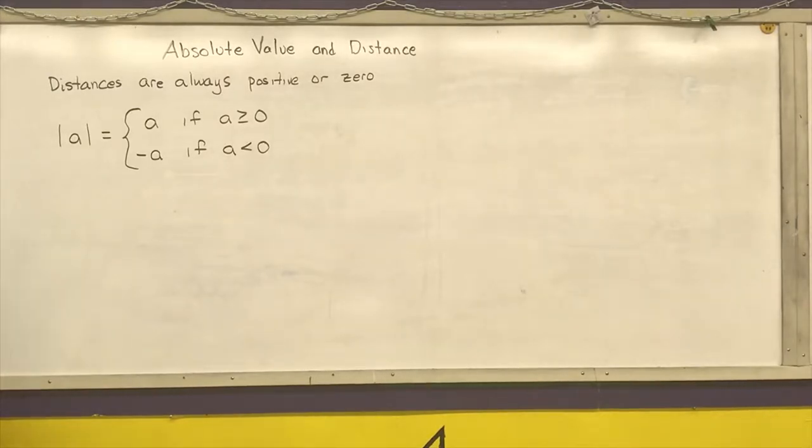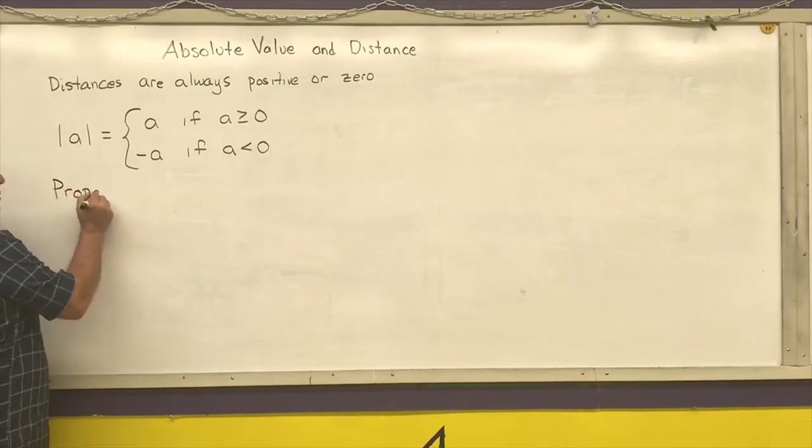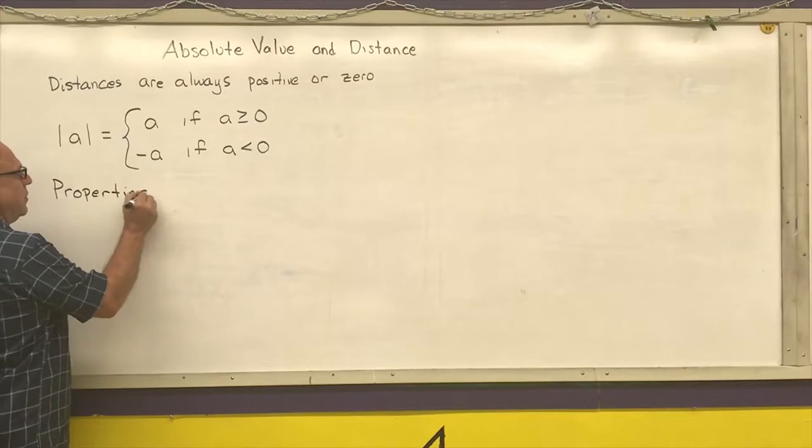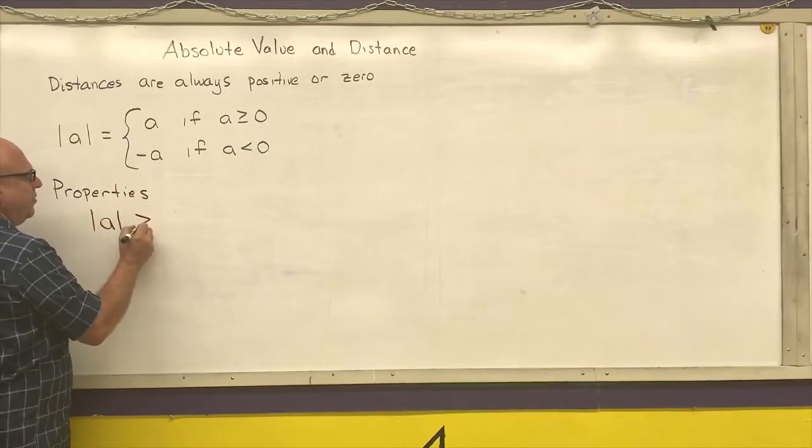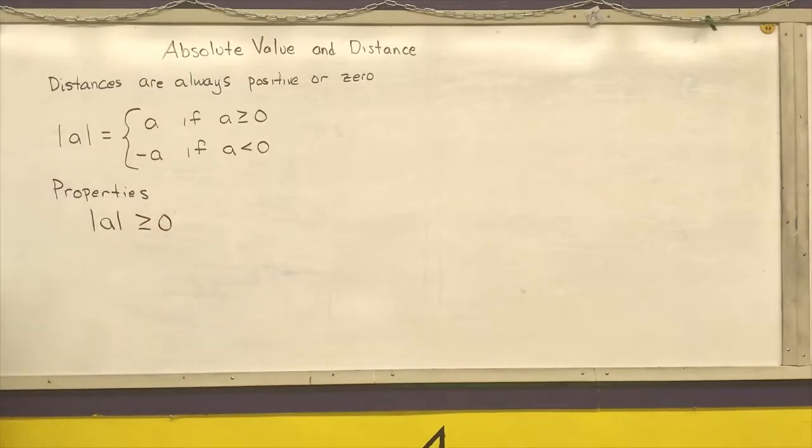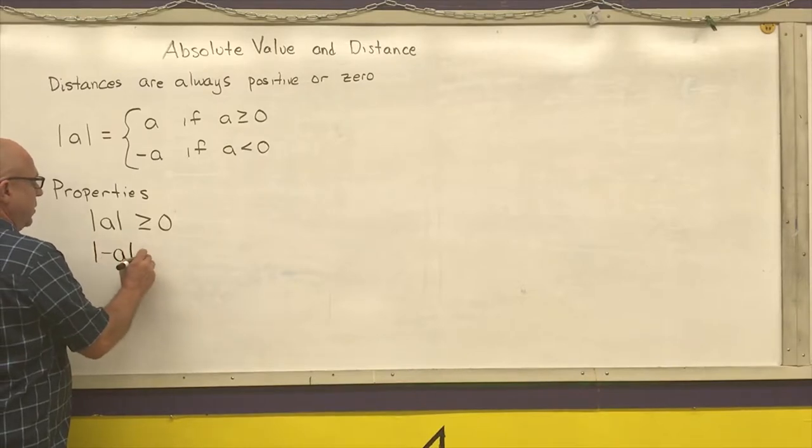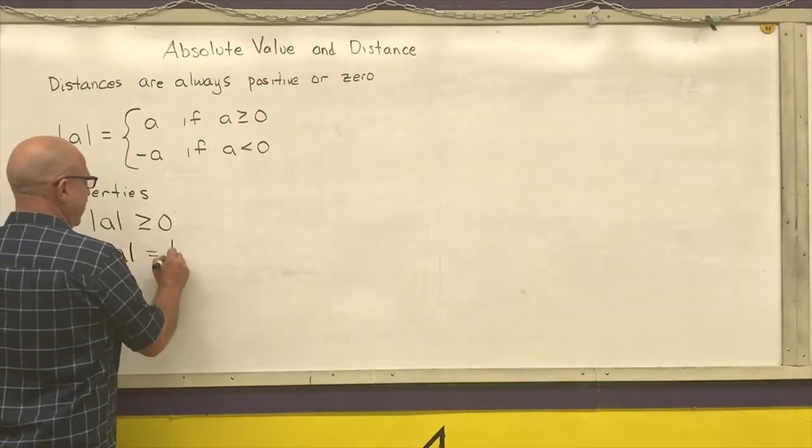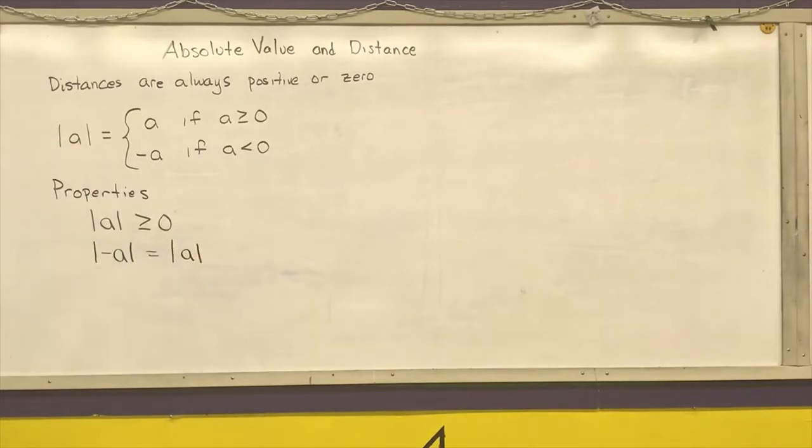Properties of absolute value. The absolute value of A has to be greater than or equal to zero, which states it is always positive or zero. Next one: the absolute value of a negative number is equal to the absolute value of the original number.